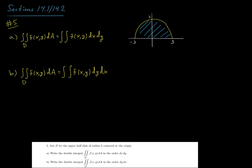All right, in question 5 it says, let D be the upper half disk of radius 3 centered at the origin. Part A says to write the double integral of the function f of x, y in the order dx, dy.